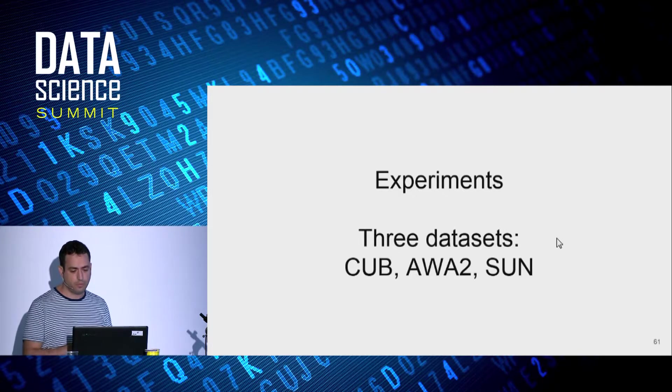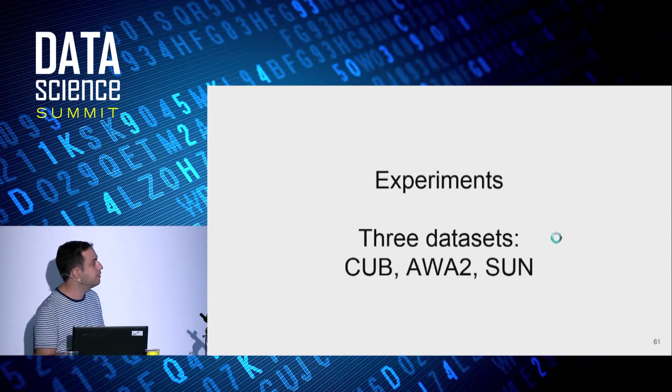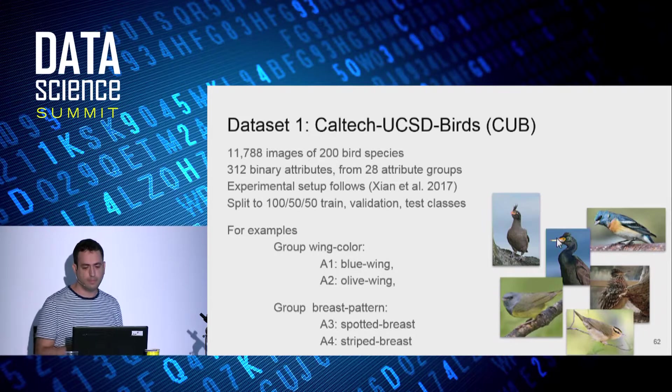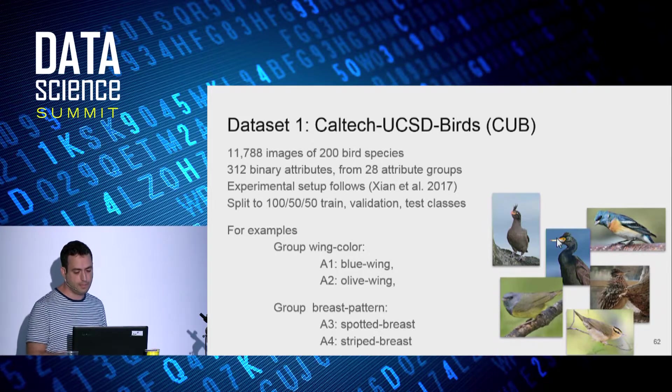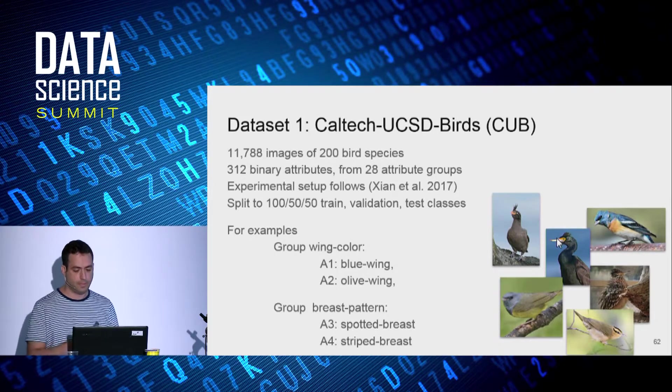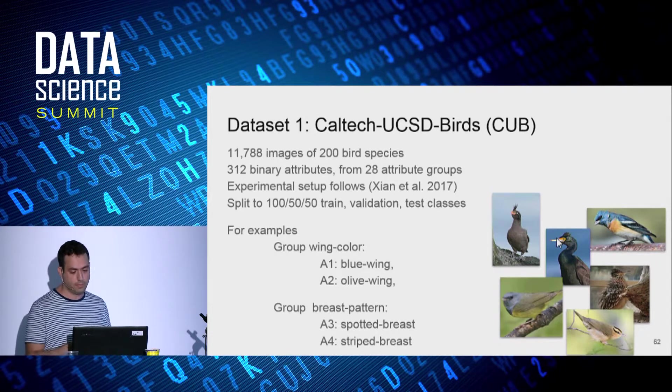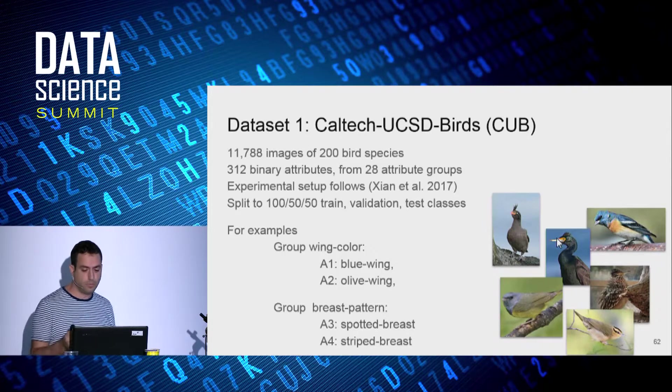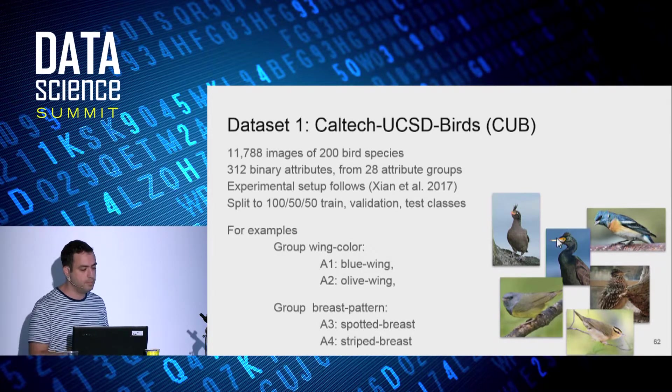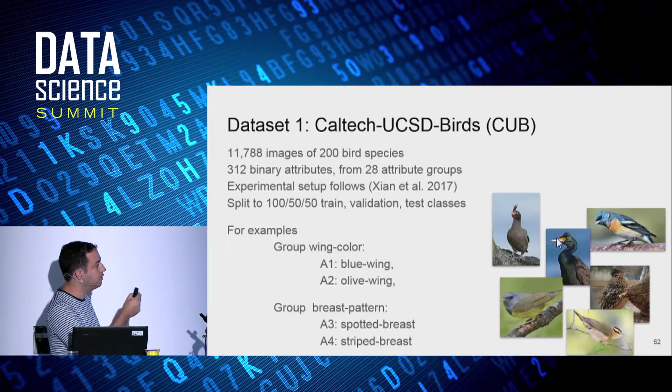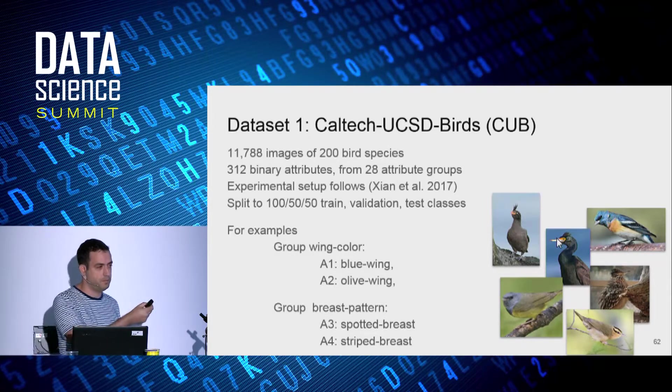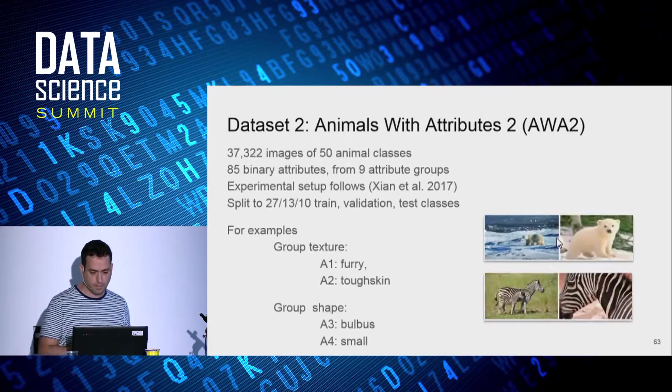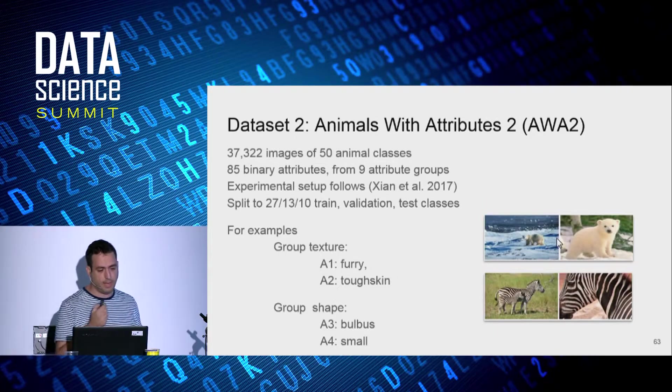We tested LAGO on three zero-shot learning benchmark datasets. The first is CUB. It's a fine-grained bird species dataset. It has 200 bird categories, 300 attributes, and 28 groups. Attributes are like blue wing, olive wing, spotted breast, striped breast. And given groups correspond to an is-a relationship. So for instance, a blue wing is a wing color. A spotted breast is a breast pattern.